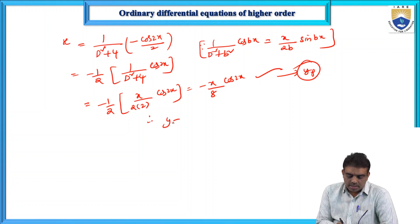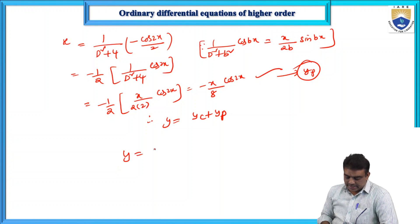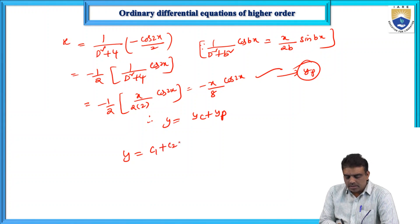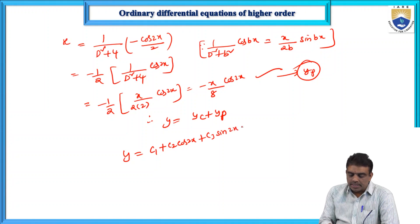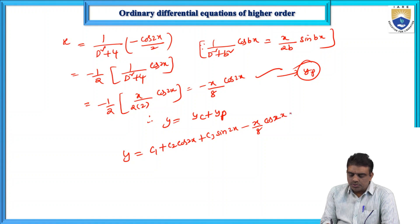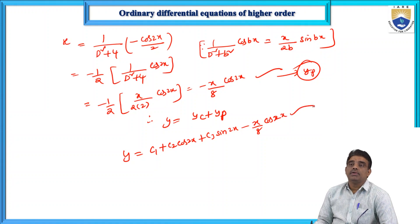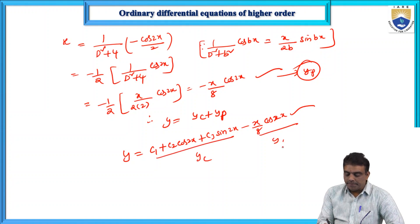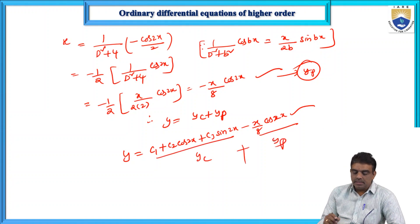Therefore the required solution y = yc + yp = c₁ + c₂cos2x + c₃sin2x - (x/8)cos2x. This is the complete solution of the given differential equation, where yc is the complementary function and yp is the particular integral.